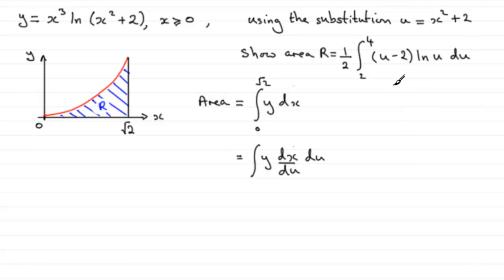So if we come down here, we can say that when X equals 0, our lower limit here, substitute it into here, and you can see that u equals 0 squared, which is 0, plus 2, so it's 2. So when X is 0, our lower limit is now 2.